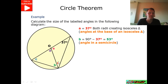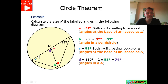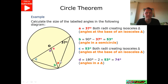So B has got to be what is left over: 90 take away 37. C here is going to be 53 also, because again we've got two radii coming away, giving us an isosceles triangle. Angle D: all angles within a triangle equal 180 degrees, so 180 take away two times 53 leaves me with 74. I've used angles in a triangle as my reasoning.